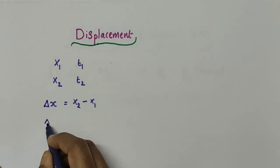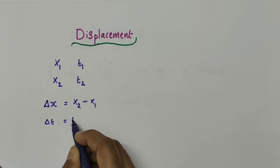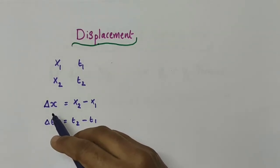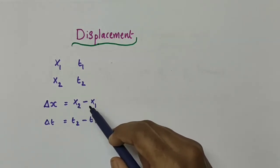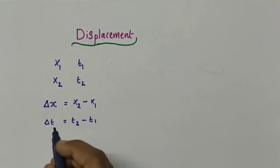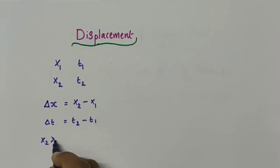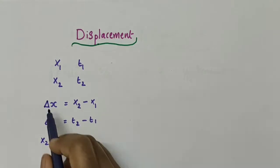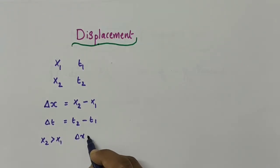This occurs in time delta t, where delta t = t2 minus t1. So displacement is actually a change in position of an object in a given time. Now, if x2 is greater than x1, then delta x will be positive.